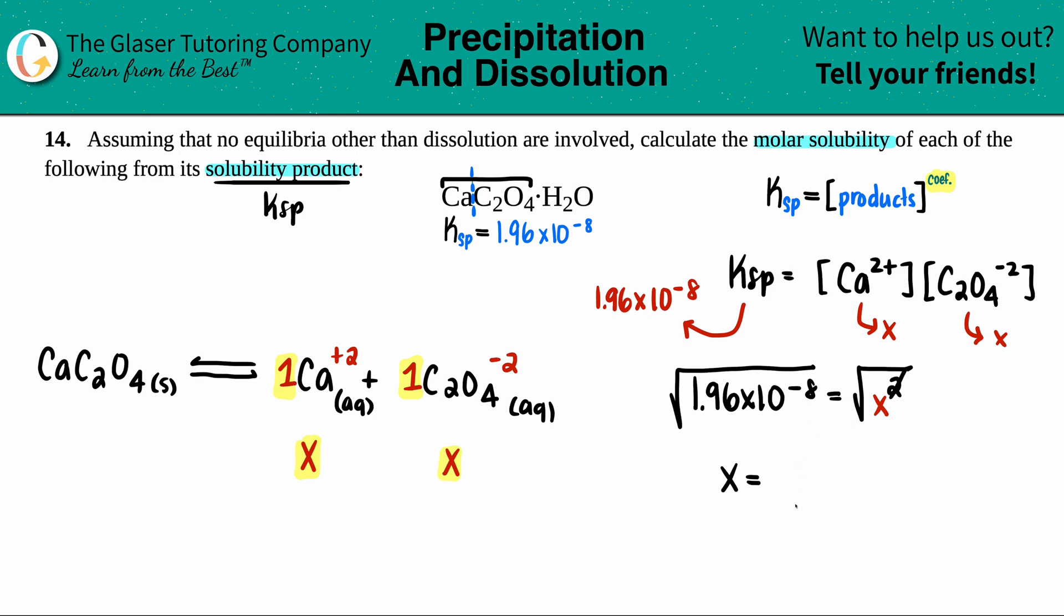So X equals square root of 1.96 times 10 to the negative eighth. I get 1.40 times 10 to the negative fourth. And that's in molarity because we're dealing with concentration.